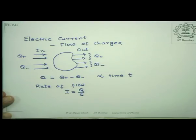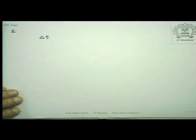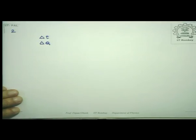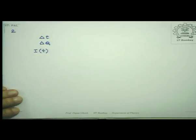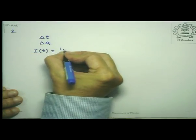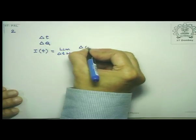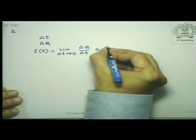This assumes steady flow, but if it is not steady, we take a more formal definition. Let's take a small time interval Δt, during which the amount of charge flowing through the surface is Δq. Then the current i at that instant is defined as the limit as Δt → 0 of Δq / Δt, which from calculus is nothing but dq/dt. So the formal definition of current is I = dq/dt.